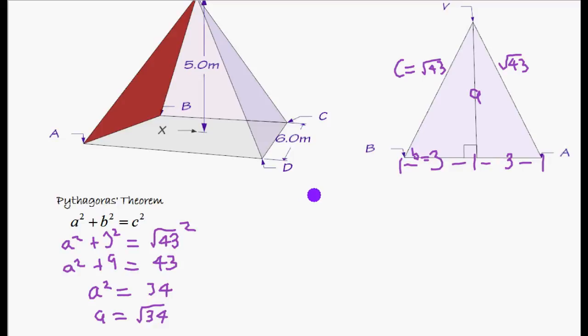And the area of a triangle is equal to the half times the base times the height, which is 6 times the height which is the square root of 34. So we have 3 times the square root of 34 because half of 6 is 3.